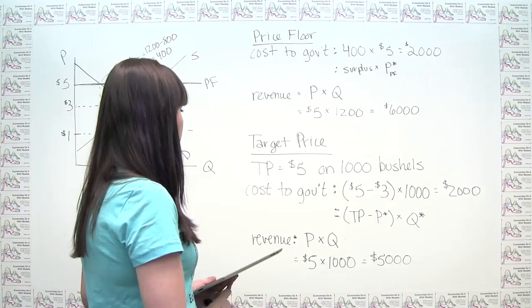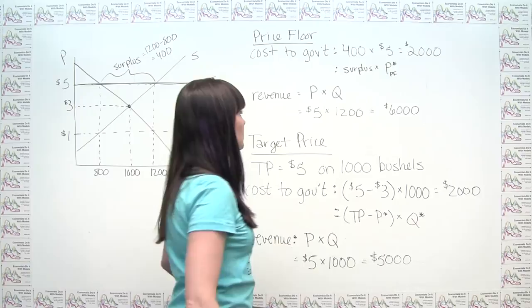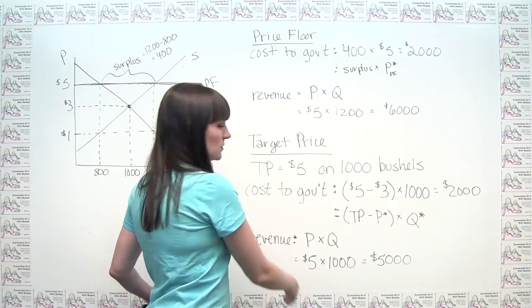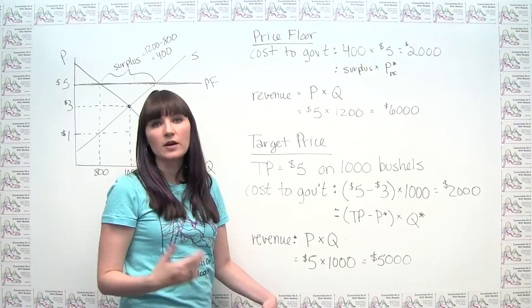Comparing the two policies: the government spends $2,000 in each case, but producers get more revenue under the price floor ($6,000) than under the target price ($5,000). We should think about the trade-offs and the impact on consumers under each policy, and which of these is actually more efficient.